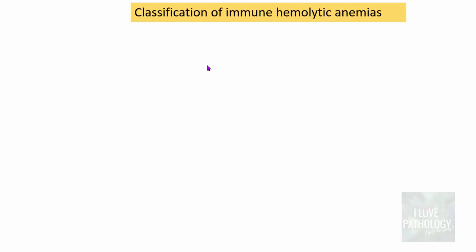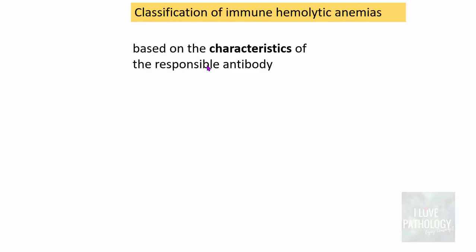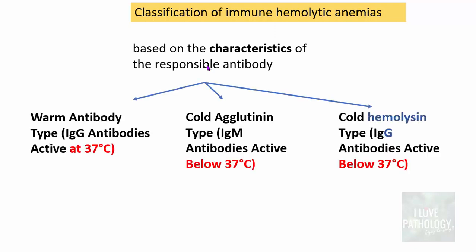How do you classify Immune Hemolytic Anemias? They are classified based on the characteristics of the responsible antibody. They can be warm antibody or cold antibody type. Warm antibody type consists of IgG antibodies active at 37°C, and cold antibodies can be of the cold agglutinin type, which are IgM, and cold hemolysin type, which are IgG antibodies.